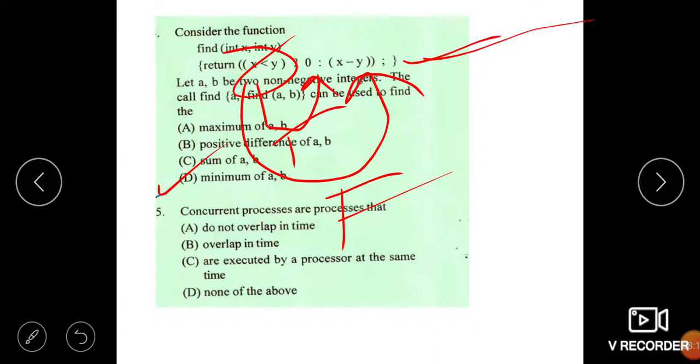The next question says that concurrent processes are processes that do not overlap. Option B is correct, that is overlap in time. Overlap in time is called concurrent process.